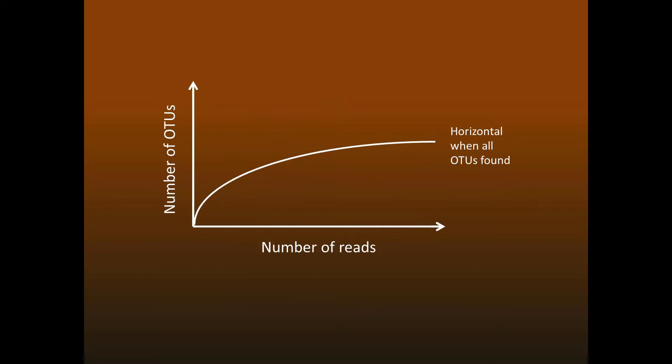Rarefaction analysis plots the number of species or OTUs against the number of observations, which in this case is the number of reads. The idea is that when all species have been observed, then the curve will flatten out into a horizontal line. In traditional biodiversity analysis, we don't have to worry about experimental error in the observations, and this works fine.